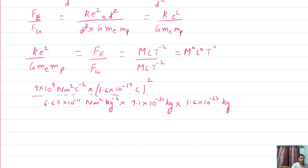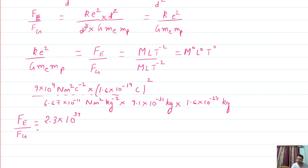Don't solve it step by step on your paper — just remember this value. This is the approximate value: 2.3×10³⁹. Now what does this ratio signify? It signifies the force between electron and proton in the electric field divided by the force between electron and proton in the gravitational field. So you can say that in the electrical field, the force is 2.3×10³⁹ times the force experienced in the gravitational field. That means electrostatic force is very strong, and gravitational force is a weak force.